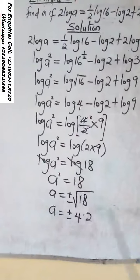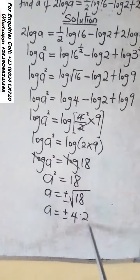You find the square root of 18. Square root of 18 will give you 4.2.